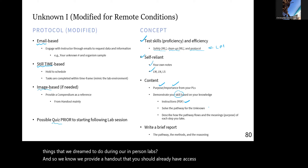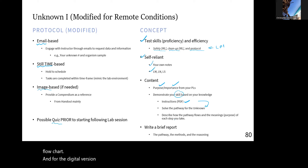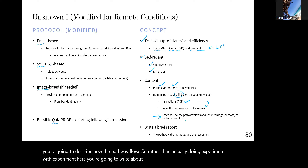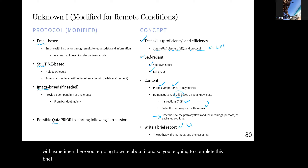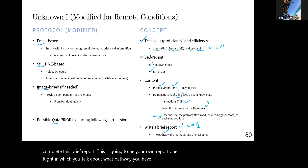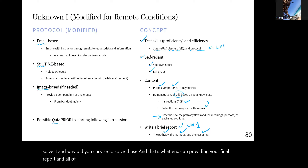We're looking to see if you understand the point behind every experiment you've learned so far and your ability to demonstrate your skill. We normally provide a handout you should already have access to. Your job is to solve the document containing the flow chart. For the digital version, rather than actually performing experiments, you're going to describe how the pathway flows — you'll write about it, completing your unknown report one, talking about what pathway you took, what you used, and why.